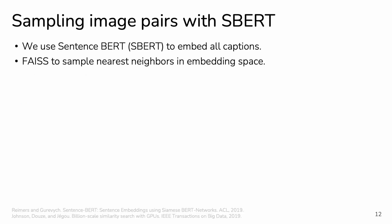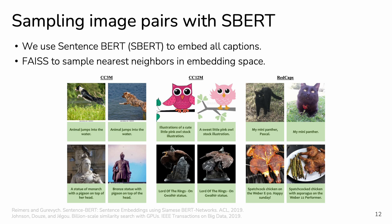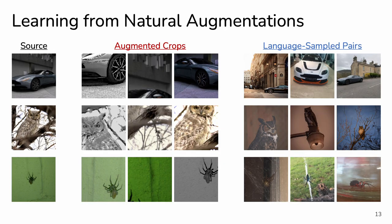We operationalize this observation by using language models to sample conceptually similar images. Specifically, we sample nearest neighbors in the embedding space of a sentence-BERT model. A quick look at the sampled pairs reveals interesting visual variations for images of the same action, object, and scene. One way to think of this is that language sampling allows us to find natural augmentations — augmentations that look very different from ones you get from typical augmentation strategies. More importantly, natural augmentations match the variation we see in the world in terms of pose, lighting, and context.